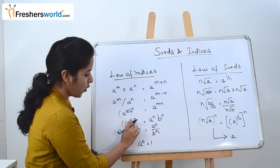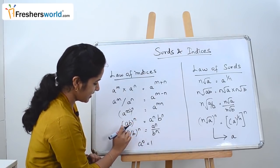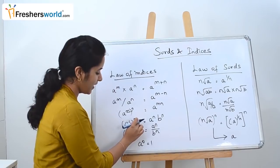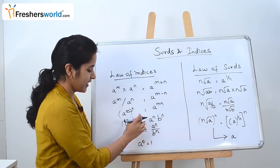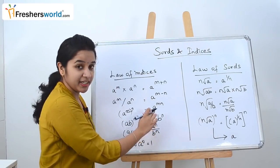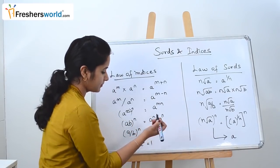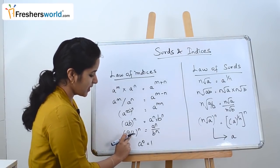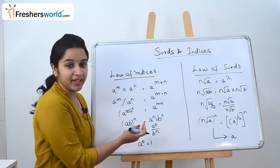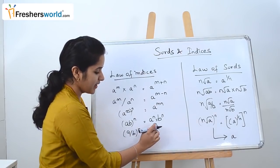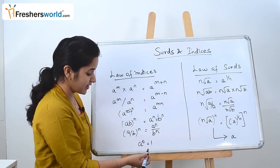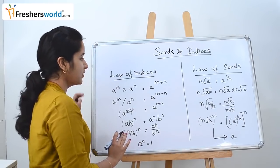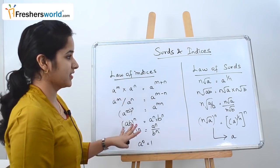Next is AB the whole power N, which is A into B the whole power N. While writing it, you can write it as A power N into B power N. Similarly, A by B the whole power N can be written as A power N by B power N. And as we all know, A power 0 is nothing but 1. These are the things that come under the Laws of Indices.